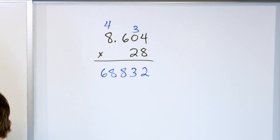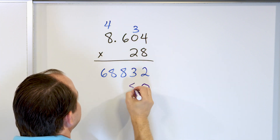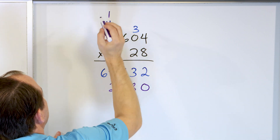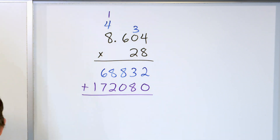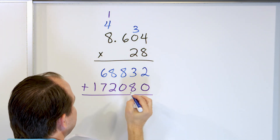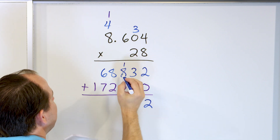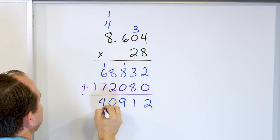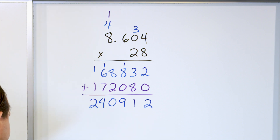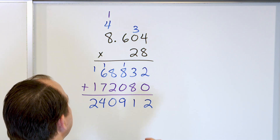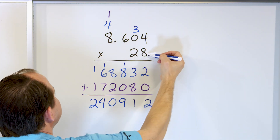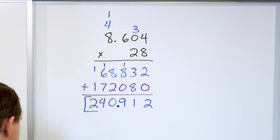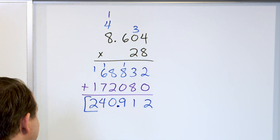Now we multiply by 2, so we drop a 0. 2 times 4 is 8, 2 times 0 is 0, 2 times 6 is 12 — carry the 1. 2 times 8 is 16, plus 1 more is 17. Now we add: 2, then 8 plus 9 is 11 carry 1, 8 plus 1 is 9, 8 plus 2 is 10 carry 1, 7 plus 7 plus 1 is 14, and a 2 in front. That gives 240912. In our problem we have 3 digits after the decimal, so the answer is 240.912.